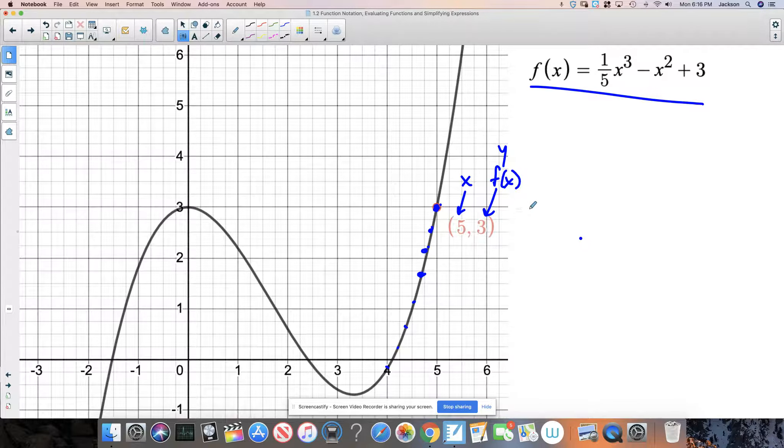I just want everybody to understand before we look at this next problem, what this point right here is saying is that when you take the function F and you plug in the number five, the result of this is a Y value of three. The X coordinate goes in here. The Y coordinate is the result.